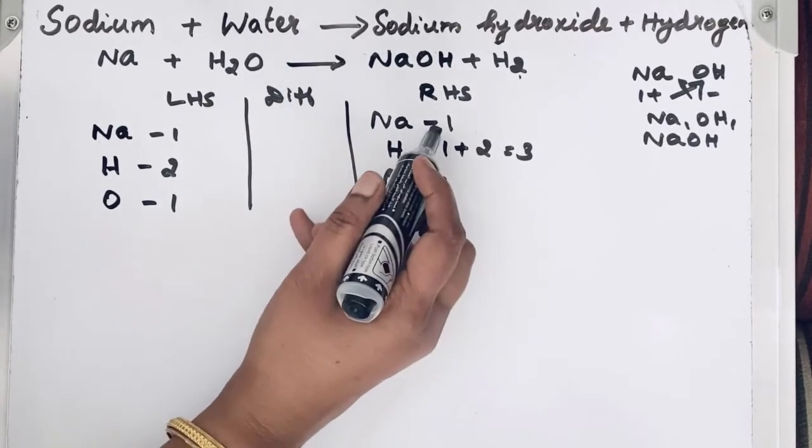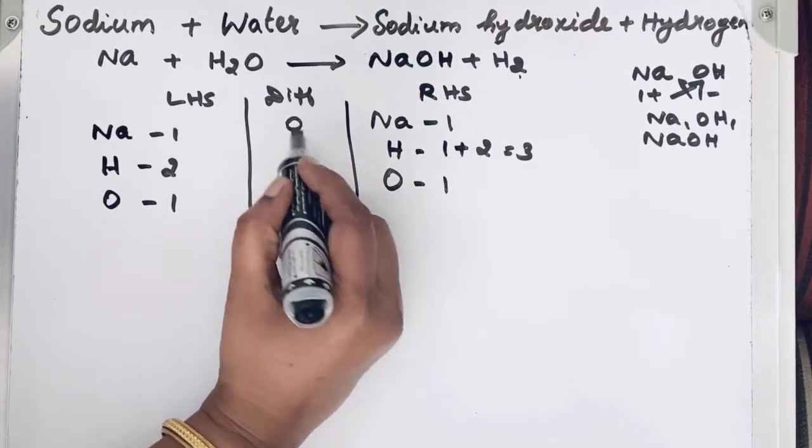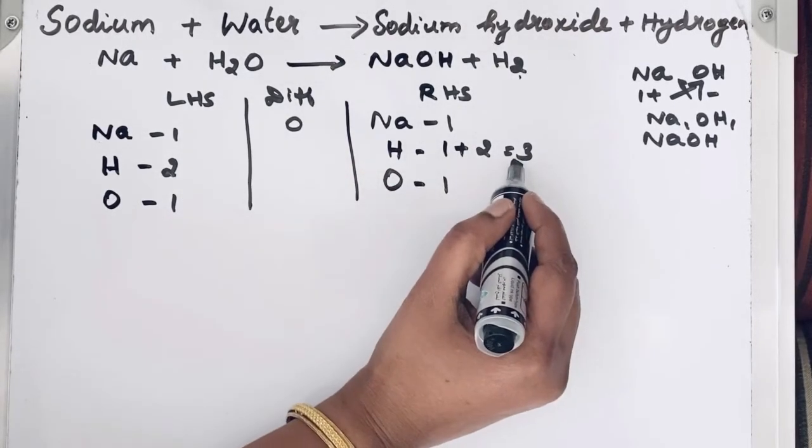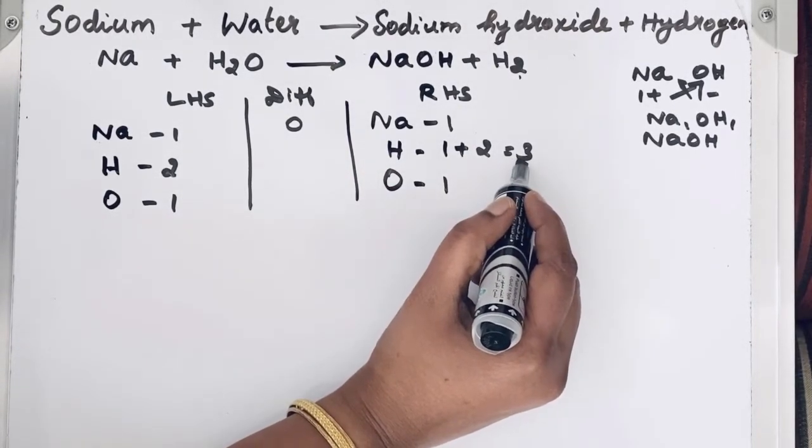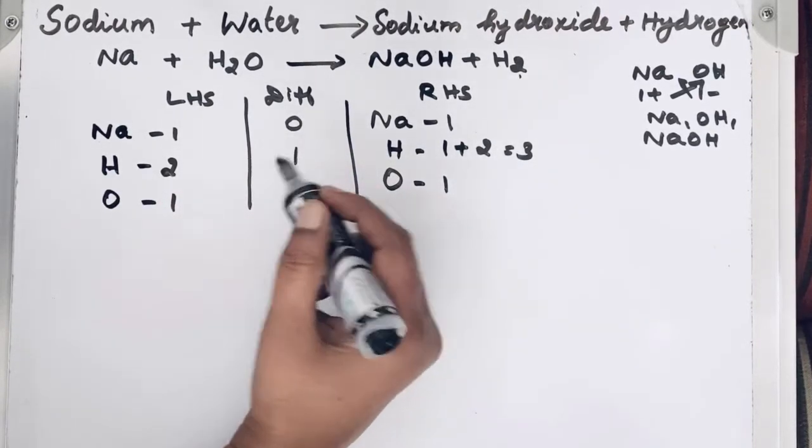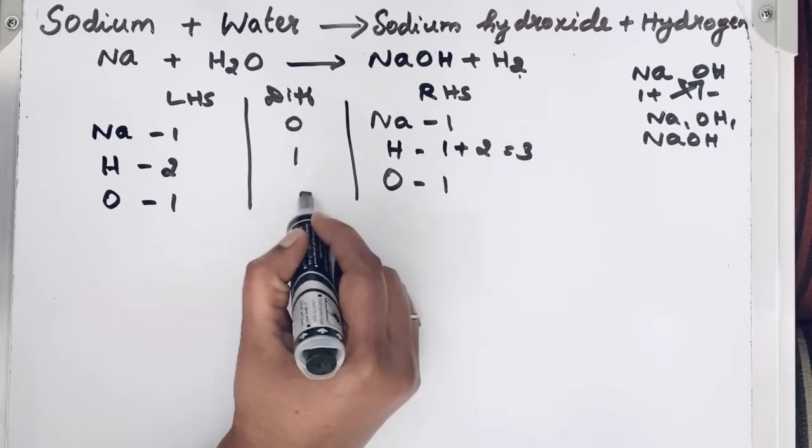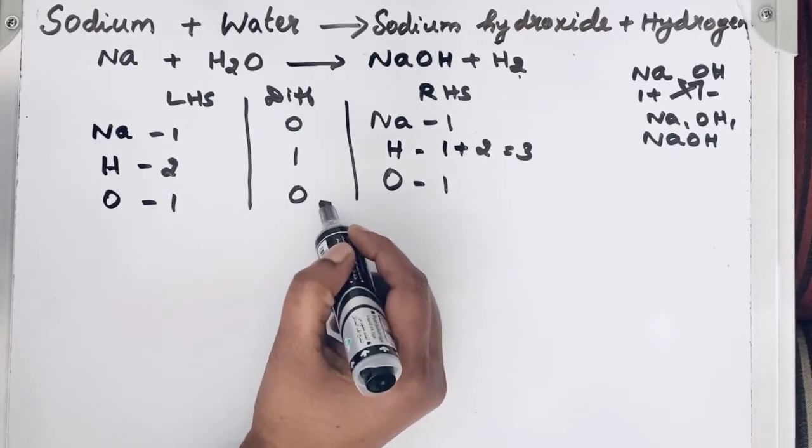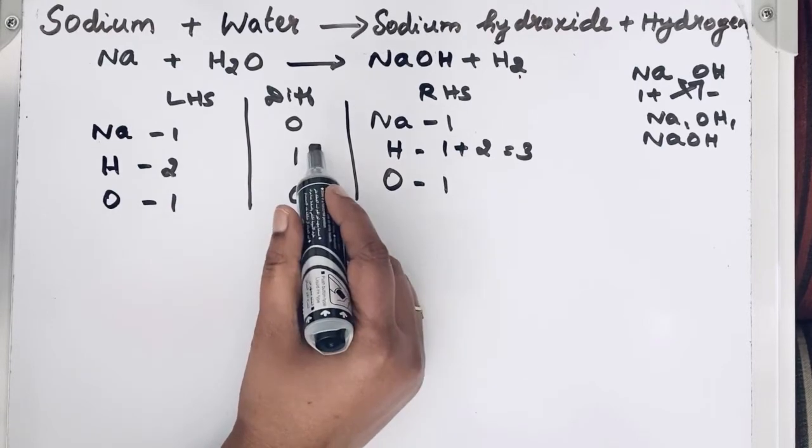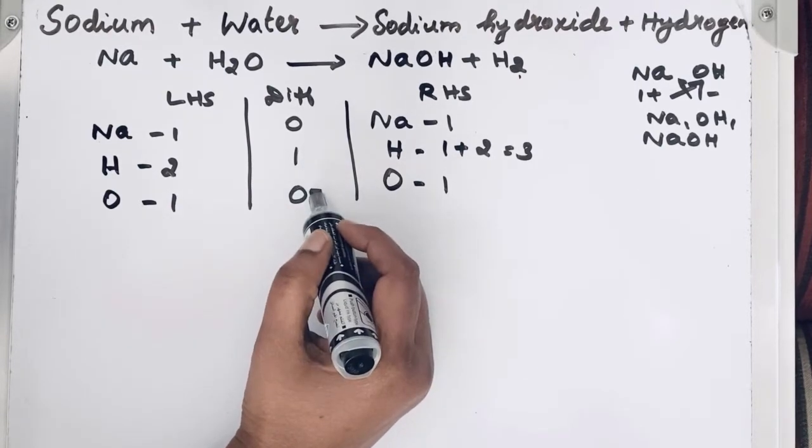For example, sodium, 1 minus 1 will be 0. But for hydrogen, we have 3 hydrogen atoms in the right hand side. So 3 minus 2, we have only 1. For oxygen, 1 minus 1, we will get 0. So until we get 0 in difference column, we will balance the equation.